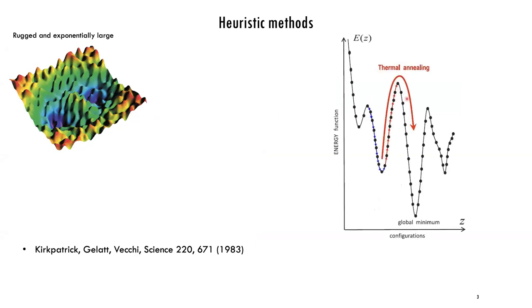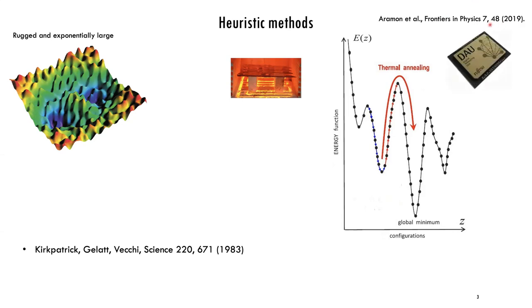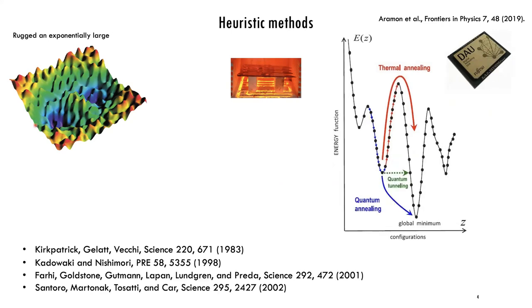One method used over the years is thermal annealing, which uses thermally activated processes to overcome barriers during the search. This was inspired by the metallurgical technique of thermal annealing, whereby to make metal more durable you heat it at a very high temperature to give kinetic energy to the atoms, then cool it down so the system finds a configuration that minimizes the free energy. This has also been implemented on dedicated hardware using quantum principles — so-called quantum annealing — whereby you tunnel through barriers in the energy landscape.